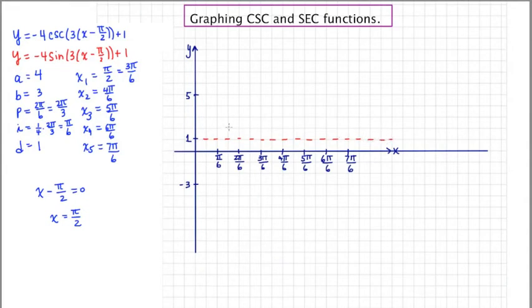Okay, now in my class, the way that I remember sine is I do intercept, max, intercept, min, intercept. Except in this case, because of the negative in front, the whole graph is flipped upside down. So my first key point, which is at 3 pi over 6, is going to be an intercept.